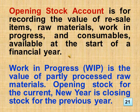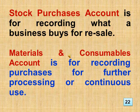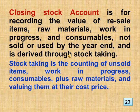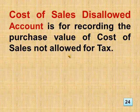Work in progress (WIP) is the value of partly processed raw materials. Opening stock for the current new year is closing stock for the previous year. Stock purchases account is for recording what a business buys for re-sale. Materials and consumables account is for recording purchases for further processing or continuous use. Closing stock account is for recording the value of re-sale items, raw materials, work in progress, and consumables not sold or used by the year end, derived through stock taking — the counting of unsold items and valuing them at their cost price. Cost of sales disallowed account is for recording the purchase value of cost of sales not allowed for tax.